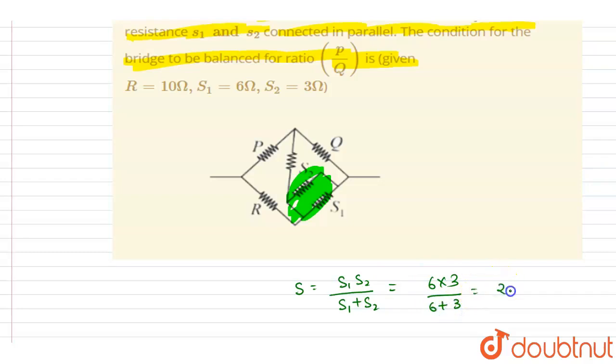So it will be 18 by 9, that is 2 ohm. So we can replace these two by a resistance of 2 ohm.